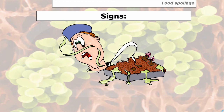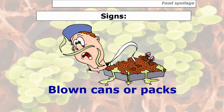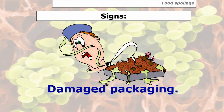Further signs of food spoilage include unusual taste, the production of gas such as hydrogen or carbon dioxide depending on where the gas is situated, and blown cans or packs — where there's a gas build-up in cans or packs of food. For example, a box of wine can look like a football due to a build-up of carbon dioxide from yeasts not destroyed by sulfites. Damaged packaging is another sign.